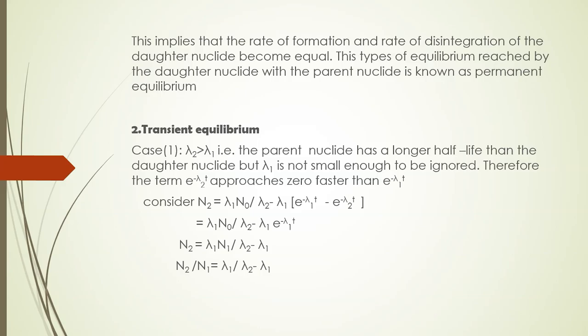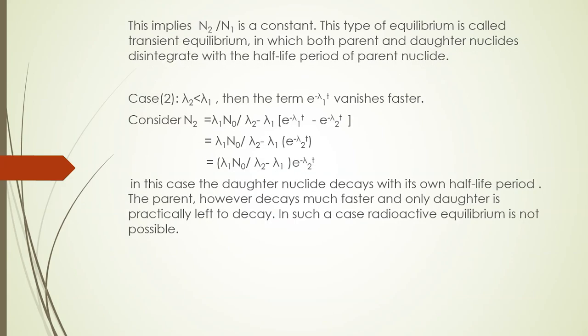Applying the above condition, we get the final expression: N₂/N₁ = λ₁ / (λ₂ − λ₁), which is a constant. This type of equilibrium is called transient equilibrium, in which both the parent and daughter nuclei disintegrate with the half-life period of the parent nuclei.